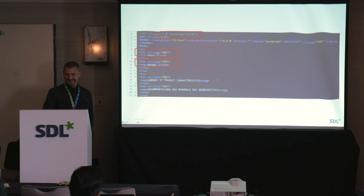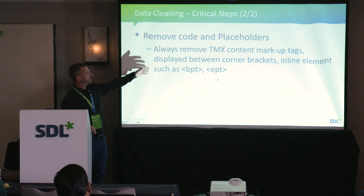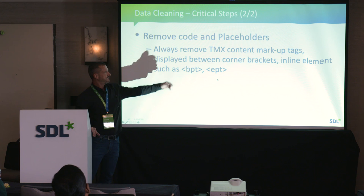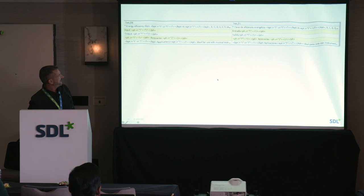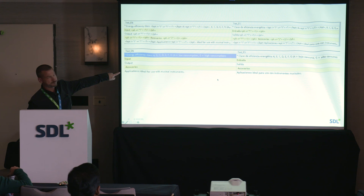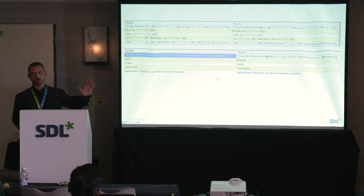Another critical step is to remove codes and placeholders in the TMX, as these will have a negative impact on training. Remove TMX content markup tags — anything in corner brackets like BPT, PT, and similar tags. There are tools to do find-and-replace to remove all these tags. If you do these critical steps, you'll already be in good shape to start your training.